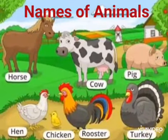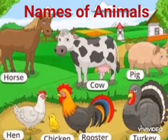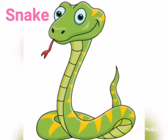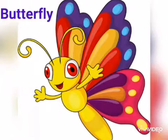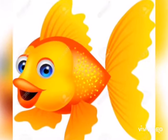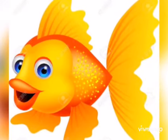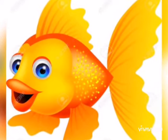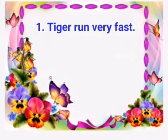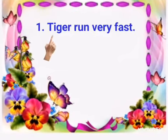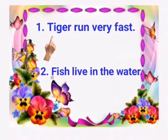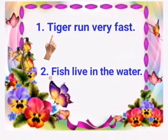Now, the last category is names of animals like cow, monkey, tiger, snake, bee, butterfly, fish, etc. All these are Nouns. Kids, identify which is the Noun in this sentence: Tiger runs very fast. Yes, here, Noun is tiger. Now, the second: Fish live in the water. So, here, Noun is fish.